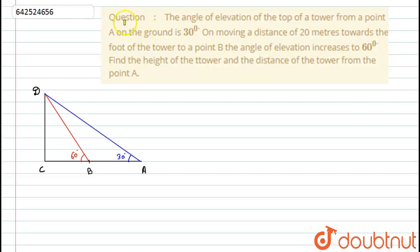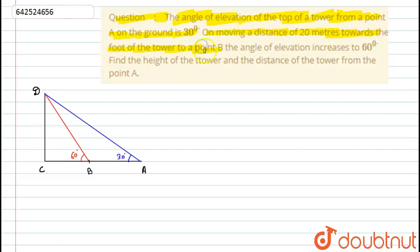Hello students, let's start with the question. Here we have given the angle of elevation of the top of the tower from a point A on the ground is 30 degrees. On moving a distance of 20 meters towards the foot of the tower to point B, the angle of elevation increases to 60 degrees. Then find the height of the tower and the distance of the tower from point A.